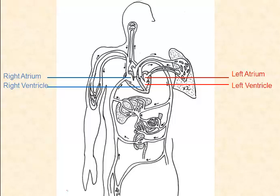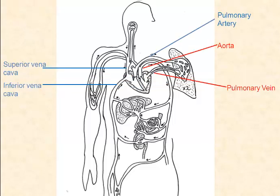You should be familiar with a few of these already. The blood vessels associated with the heart include the superior vena cava, which delivers deoxygenated blood from the upper parts of the body to the right atrium; the inferior vena cava, which delivers deoxygenated blood from the lower parts of the body to the right atrium; the pulmonary artery, which moves deoxygenated blood to the lungs; the pulmonary vein, which returns oxygenated blood back to the left side of the heart; and the aorta, which pumps oxygenated blood out to the rest of the body.